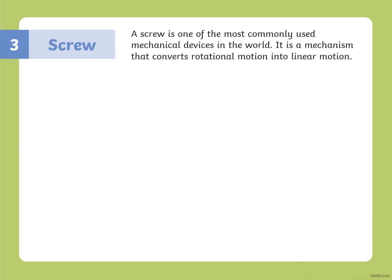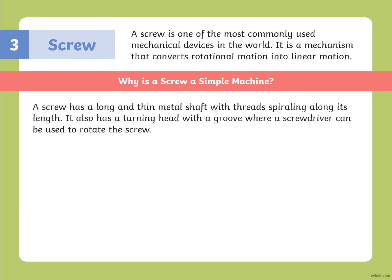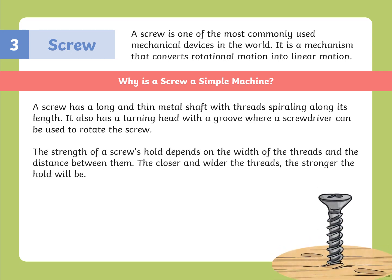The third simple machine is a screw. A screw is one of the most commonly used mechanical devices in the world — it is a mechanism that converts rotational motion into linear motion. A screw has a long, thin metal shaft with threads spiraling along its length, and a turning head with a groove where a screwdriver can be used to rotate it. The strength of a screw's hold depends on the width of the threads and the distance between them.